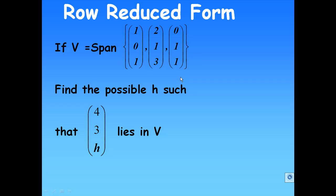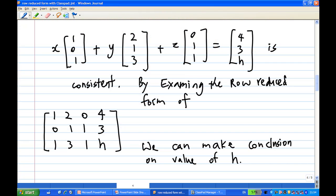Now, to do this, let's understand the problem. In order to show that [4,3,H] lies in V, then [4,3,H] must be a linear combination of [1,0,1], [2,1,3], and [0,1,1].